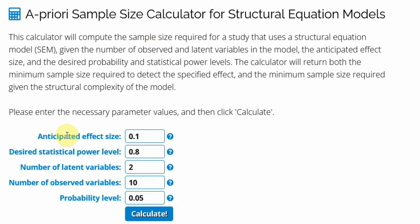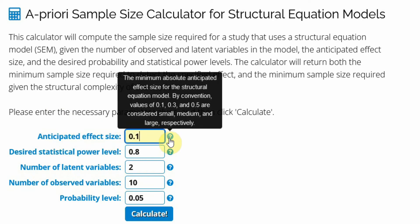Now in order to use this sample calculator we need anticipated effect size. Now this is your absolute anticipated effect size for the structural equation models. Now there are different effect sizes small medium and large. So 0.1 is small, 0.3 is medium and 0.5 is large. Normally Cohen's recommendations are used.